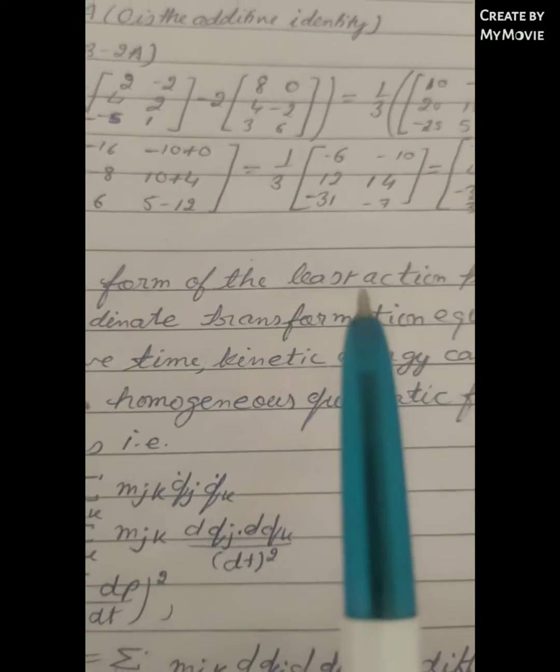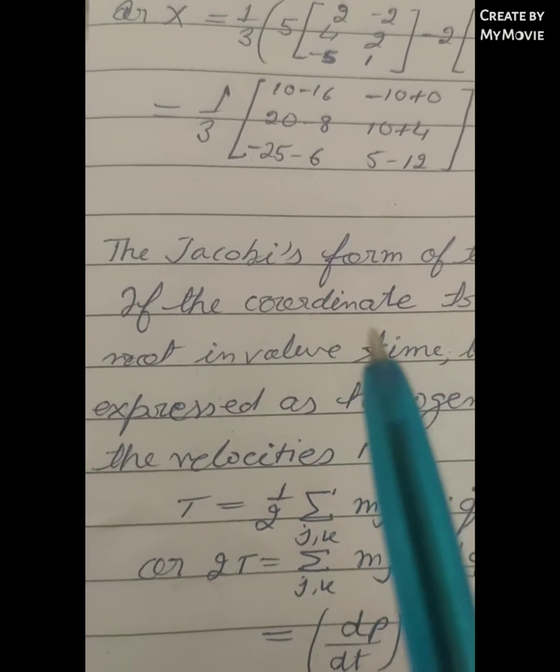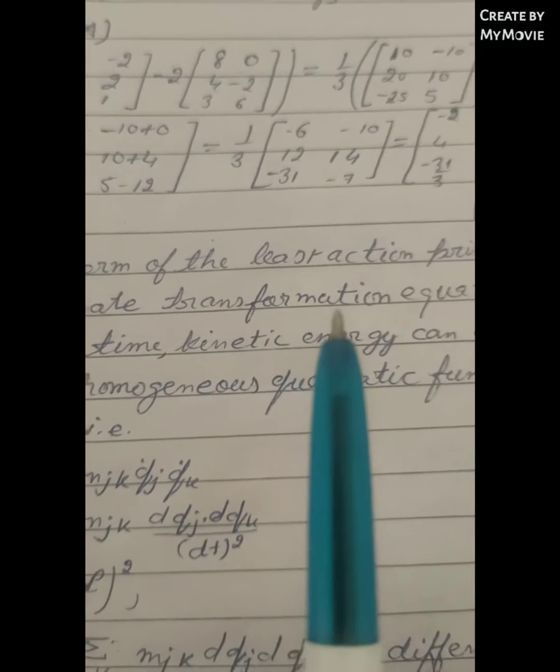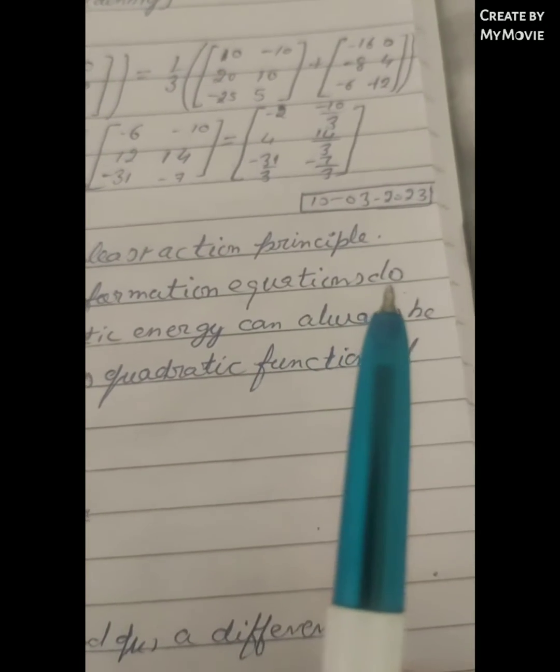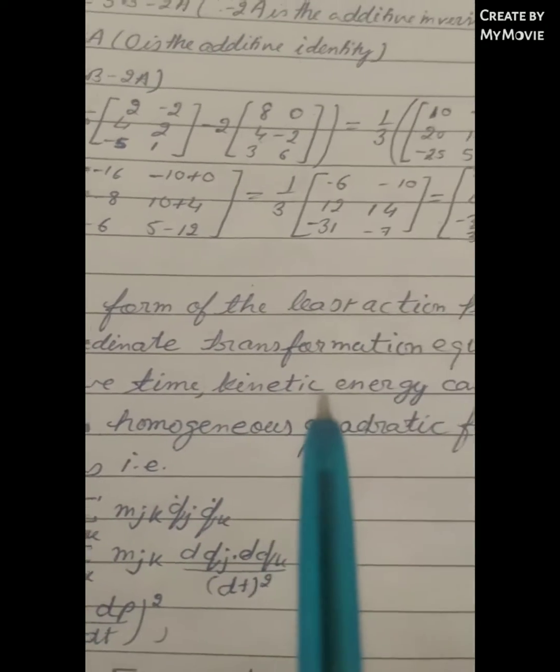Jacobi's form of the least action principle: If the coordinates of transformation equations do not involve time, the kinetic energy can always be expressed as a homogeneous quadratic function of the velocities.